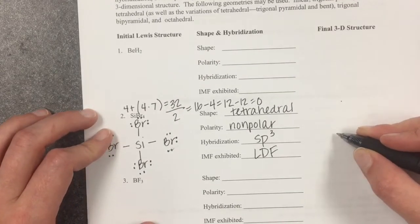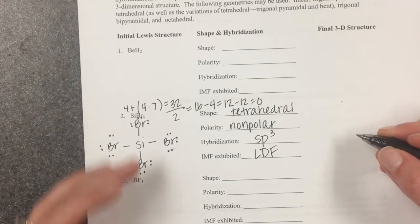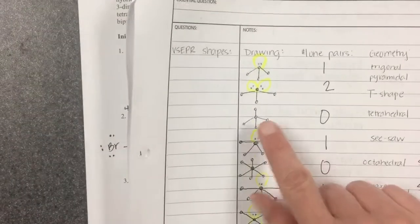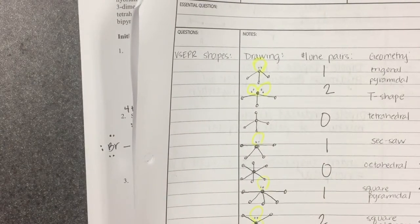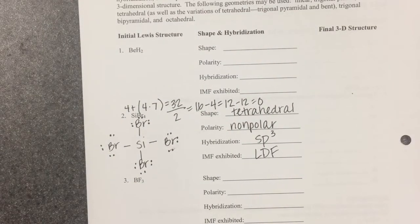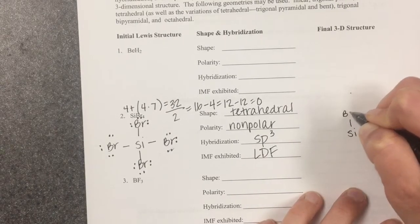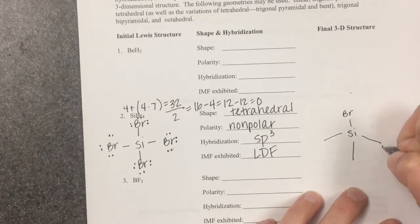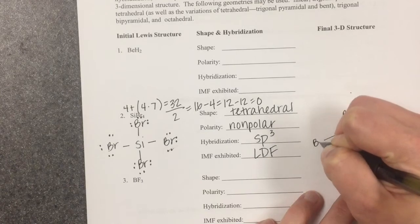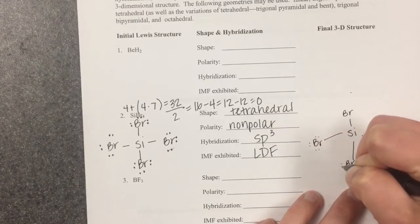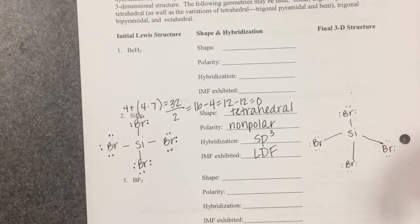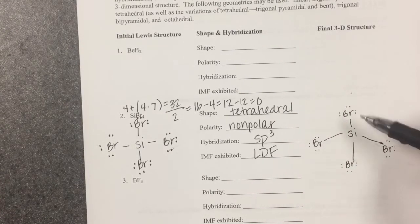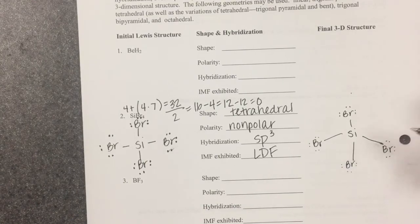For the final 3D structure, you redraw the molecule in its actual shape. For a tetrahedral, you have one atom on top and three making a pyramid at the bottom — those are the positions where they're furthest away from each other. So I put silicon in the middle, bromine up top, and make the pyramid down at the bottom. Make sure you put all the electrons that are supposed to be on there. Now that we understand VSEPR — valence shell electron pair repulsion — we understand that these atoms have moved to positions as far away from each other as possible. This is how you complete this worksheet, and I hope this helps with your notes.